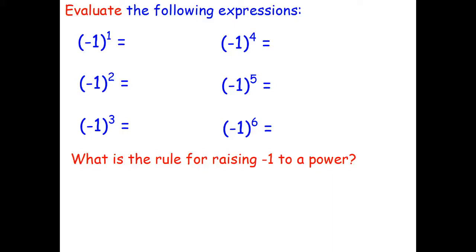Hello students. In the last video you were introduced to the first index law, which is a way to multiply powers quickly. In this video we're going to look at what happens when you raise negative numbers to powers. Here we have six questions all similar to each other — we're raising negative 1 to the powers 1 through 6. Let's go ahead and do these and then come up with a general rule for what happens when we raise negative 1 to a power.